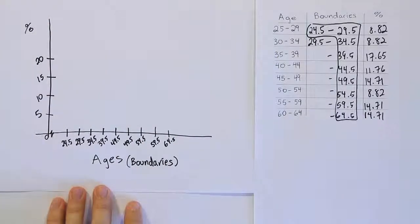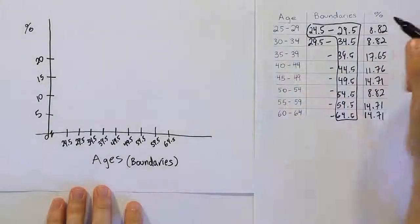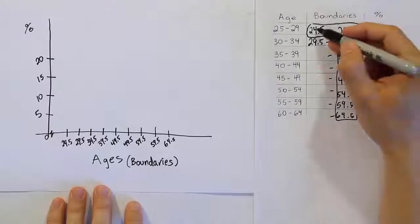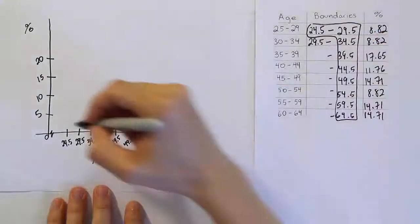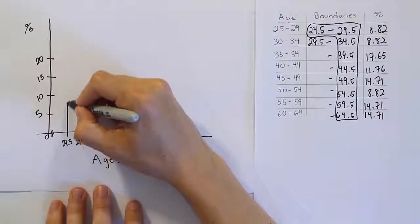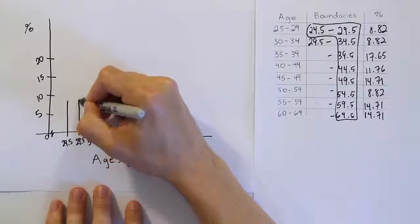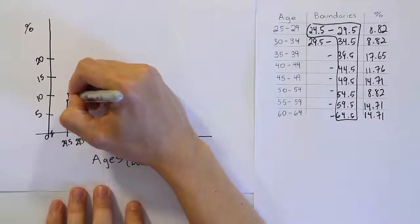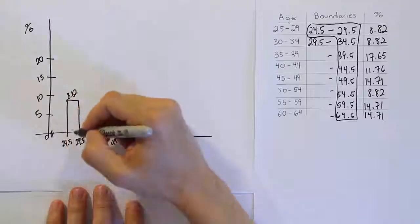From there, the rest is pretty simple. We're just going to draw rectangles that correspond to these corresponding percent heights. From 24.5 to 29.5, we're supposed to have a rectangle that's about 9% tall. I'm just eyeballing it here, and it's just rough without a ruler or whatever. There is a rectangle that's about 8.82%, and you can even write that at the top of it so people can tell how tall it is.